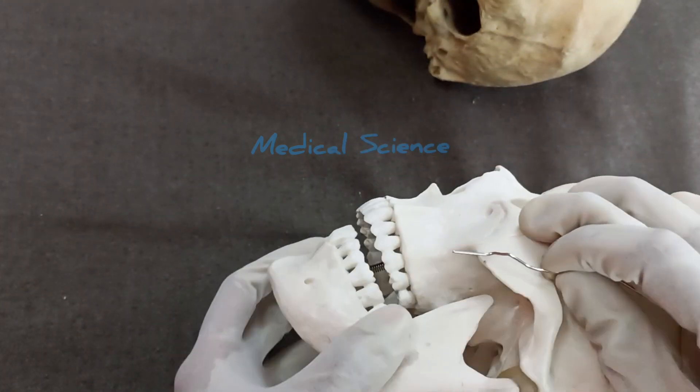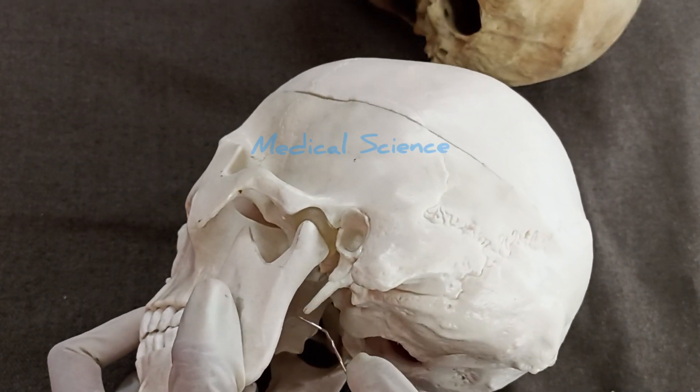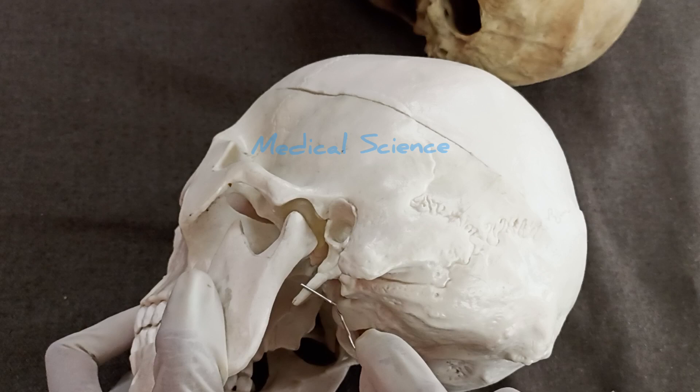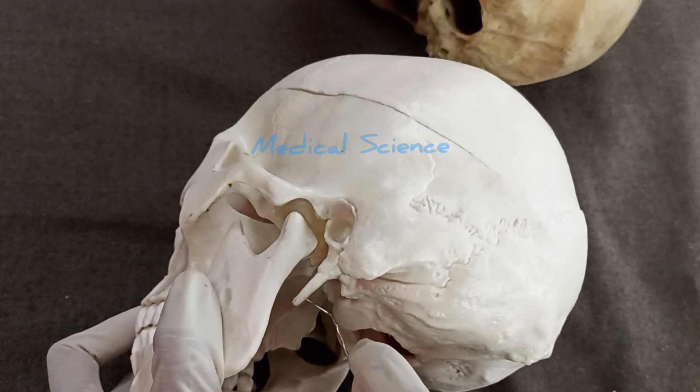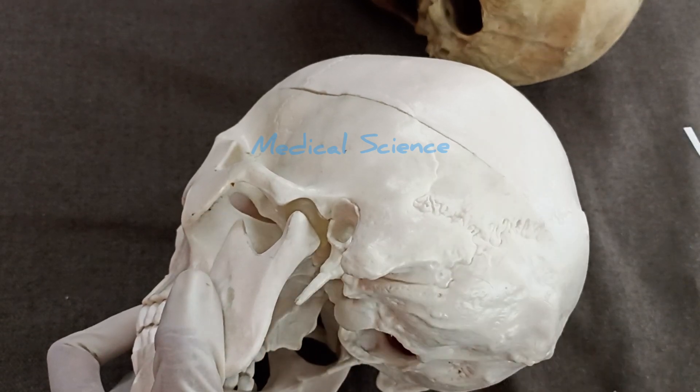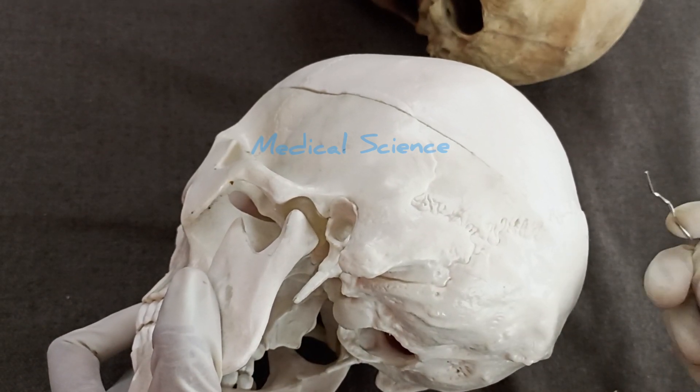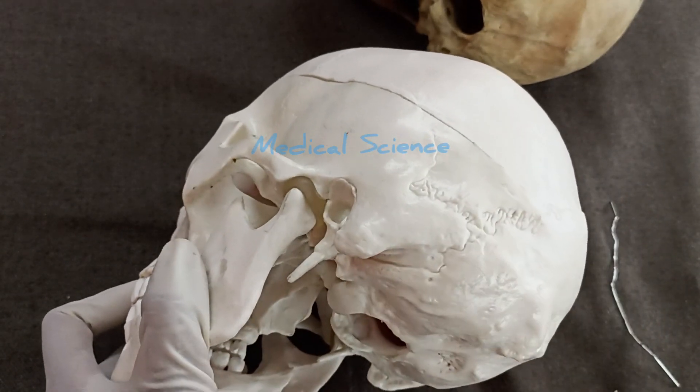The styloid process gives attachment to three muscles: stylopharyngeus, stylohyoid, and styloglossus. So it gives attachment to three muscles and two ligaments, and the whole thing is known as the styloid apparatus.